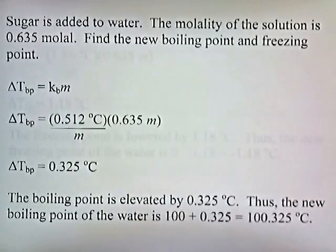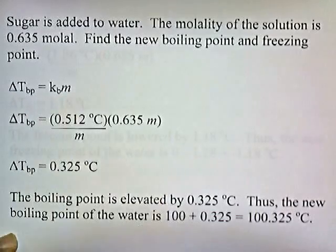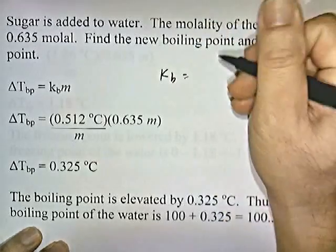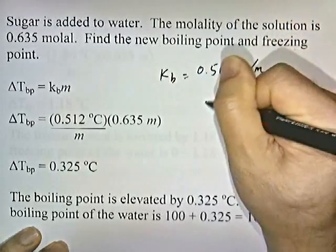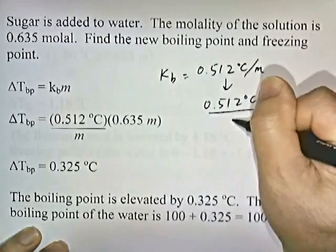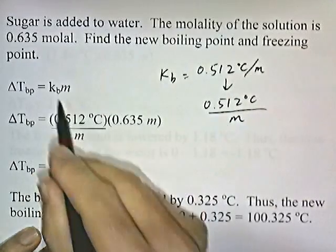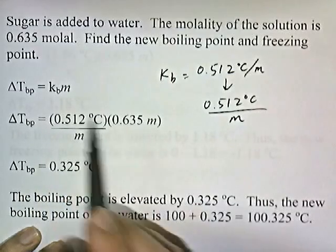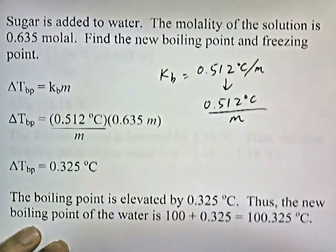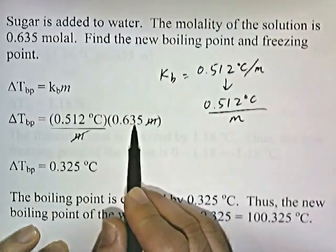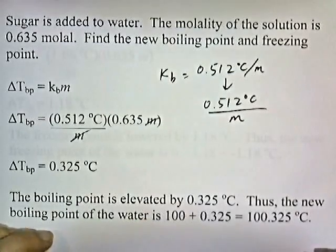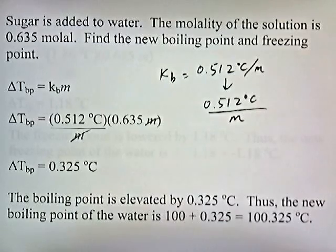Sugar is added to water. The molality of the solution is 0.635 molal. Find the new boiling point and freezing point. Let's do boiling point first. The change in temperature of the boiling point is KB times m. KB is 0.512 degrees Celsius per molal. The molality is 0.635, so the molalities cancel. 0.512 times 0.635 gives us 0.325 degrees Celsius. This tells us that the boiling point is elevated by 0.325 degrees Celsius.